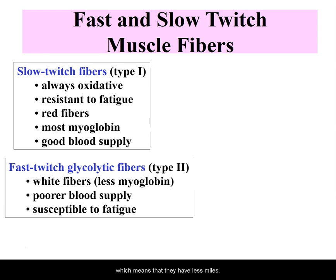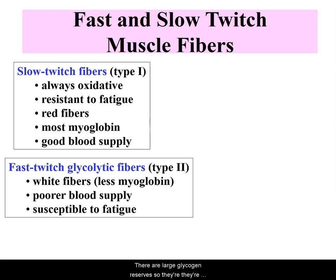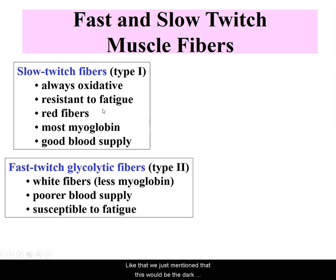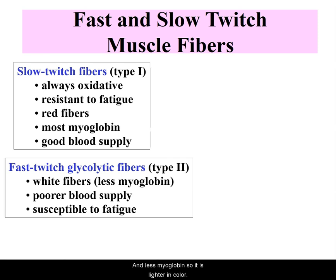Fast twitch glycolytic fibers — type 2 — are white fibers, meaning they have less myoglobin and a poor blood supply because they're not storing oxygen. They are susceptible to fatigue. Type 2 fast twitch glycolytic fibers contract rapidly and have large glycolytic glycogen reserves, making them larger in diameter. They are used for brief, powerful bursts of energy — like the light meat, such as the breast of a chicken — with fewer mitochondria and less myoglobin.